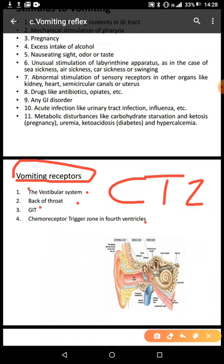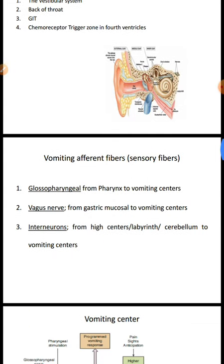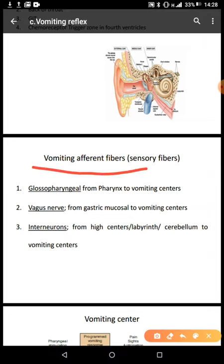This diagram shows you the location of the vestibular system. Now moving to the afferent fibers — what are the afferent fibers or sensory fibers? They are defined as nerve fibers that carry electrical impulses from the receptors towards the vomiting centers. We have the glossopharyngeal nerve, which is associated with the receptors found in the pharynx — carrying signals from the pharynx to the vomiting center.